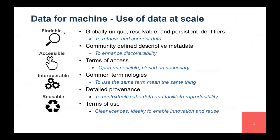The main purpose is to make sure that data can be used by machines. Going into data production at such a scale, we need to be able to find data, which means that datasets can be uniquely identified and given a resolvable and stable identifier. This allows people to retrieve and connect data.